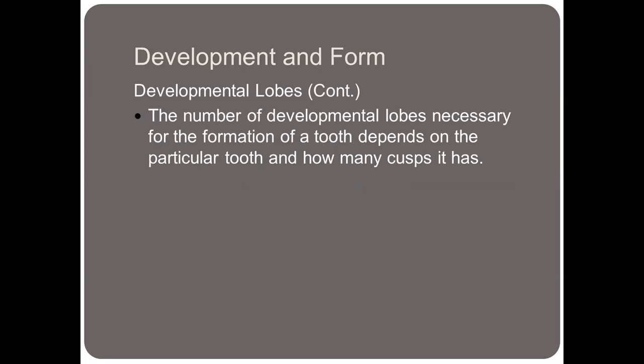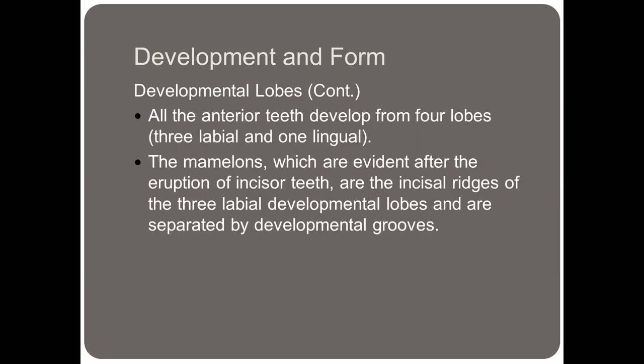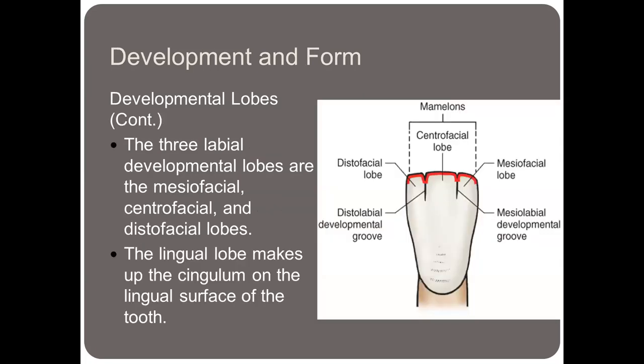The number of developmental lobes necessary for the formation of a tooth depends on the particular tooth and how many cusps it has. All anterior teeth develop from four lobes — three facial lobes and one lingual lobe. The mamelons, which are evident after eruption of incisor teeth, are the incisal ridges of those three labial developmental lobes, separated by a developmental groove. The three labial developmental lobes are mesiofacial, centrofacial, and distofacial, and the lingual lobe makes up the cingulum of the lingual surface of the tooth.